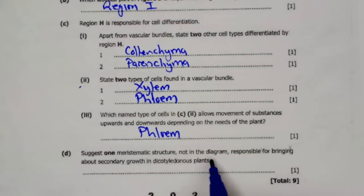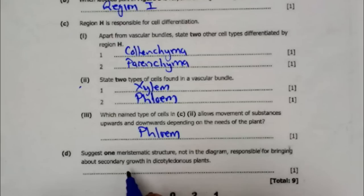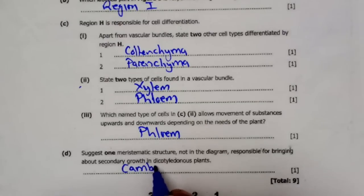D: Suggest one meristematic structure not in the diagram responsible for bringing about secondary growth in dicotyledonous plant. This is done by the cambium. These were the answers to question number three.